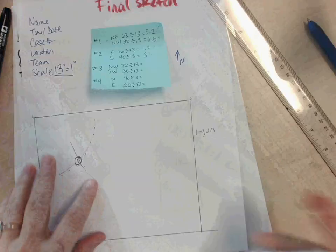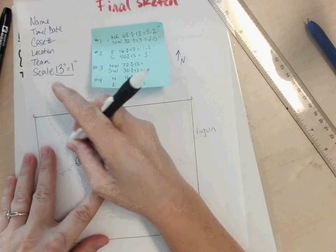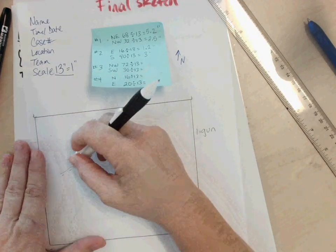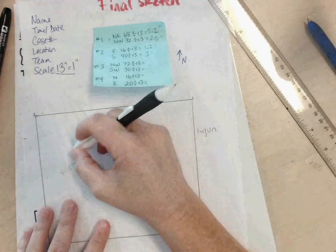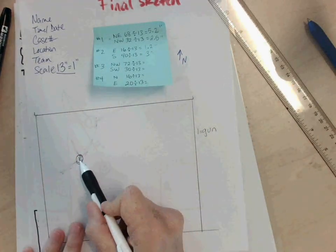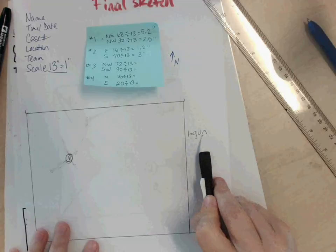We can remove these lines. You don't need those lines. It helps to have a good eraser when you're doing this. The only thing that should be on here is this circle, that number 1, and then your legend over here.